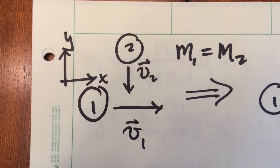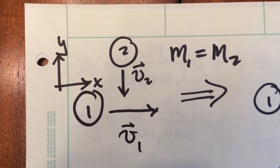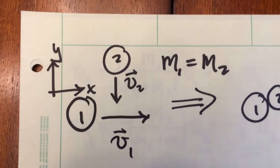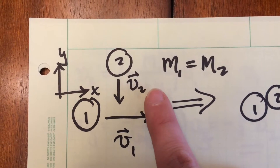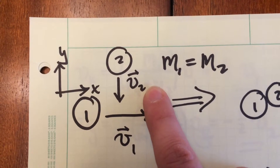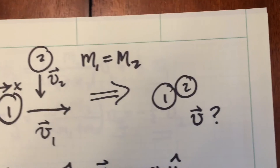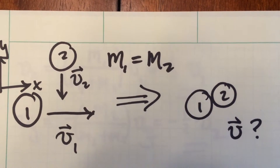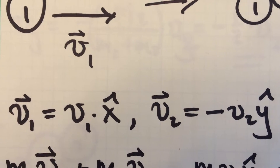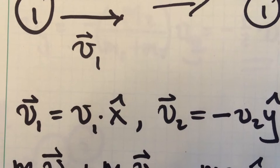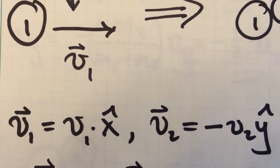Let's consider a specific case of this general problem. We have two particles, particle one and two, with initial velocity vectors shown here. Particle one's initial velocity v1 points along the positive x direction, and particle two's velocity v2 points along the negative y direction. For simplicity, let's assume mass one equals mass two. They crash into each other, and we want to find the final velocity vector v. We can write v1 vector as the scalar v1 times x-hat, and v2 vector as the scalar v2 times minus y-hat.